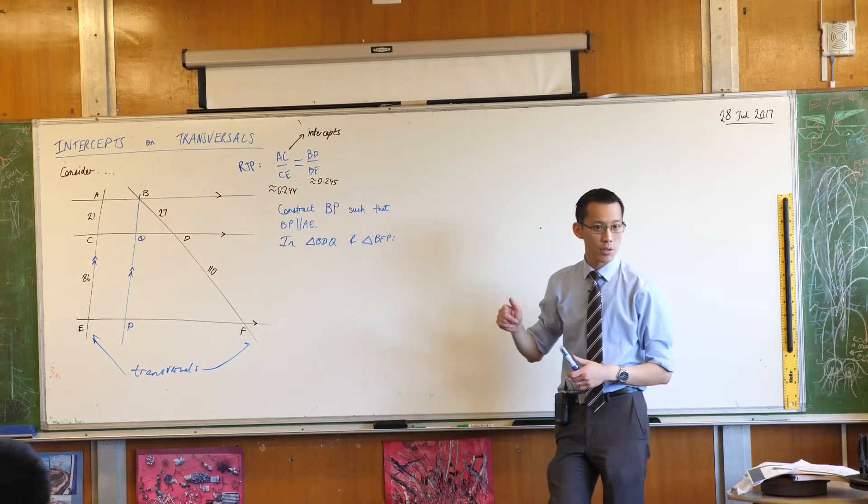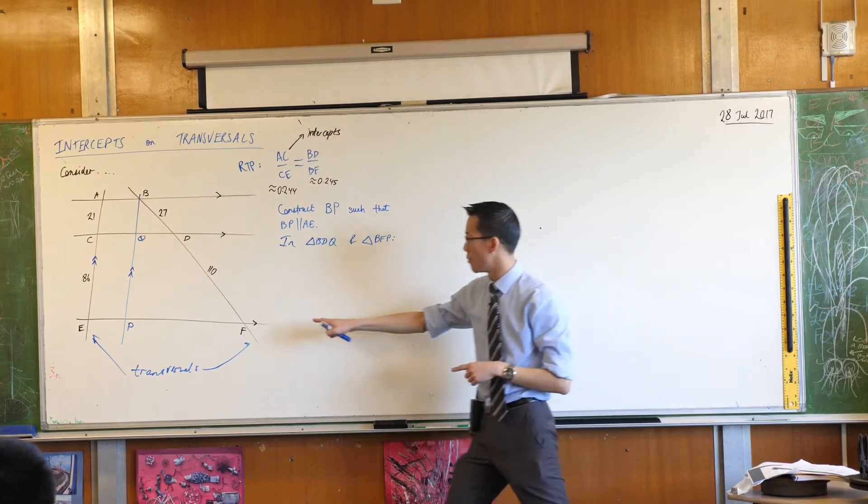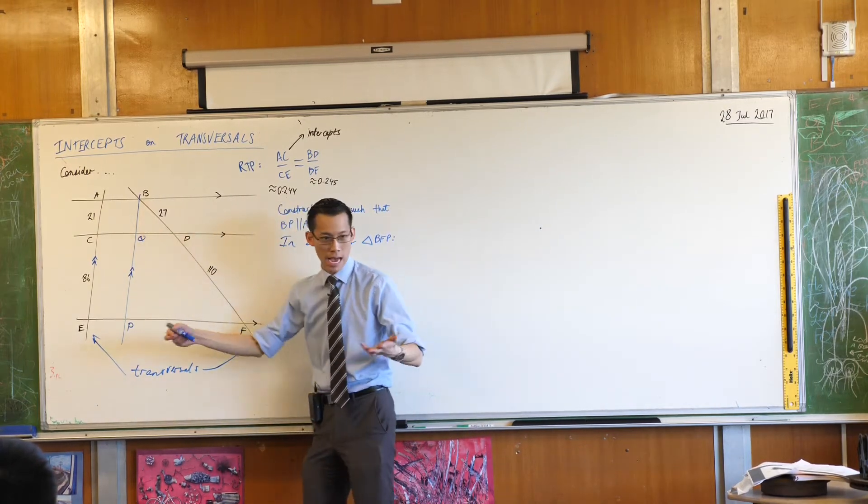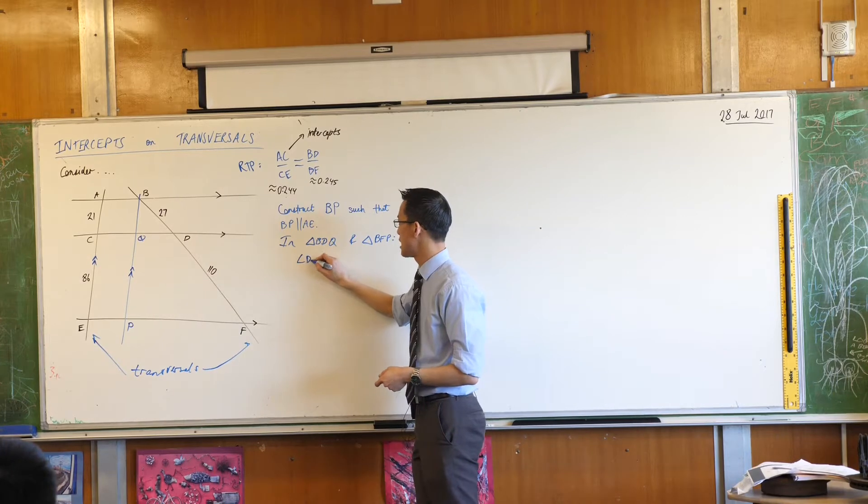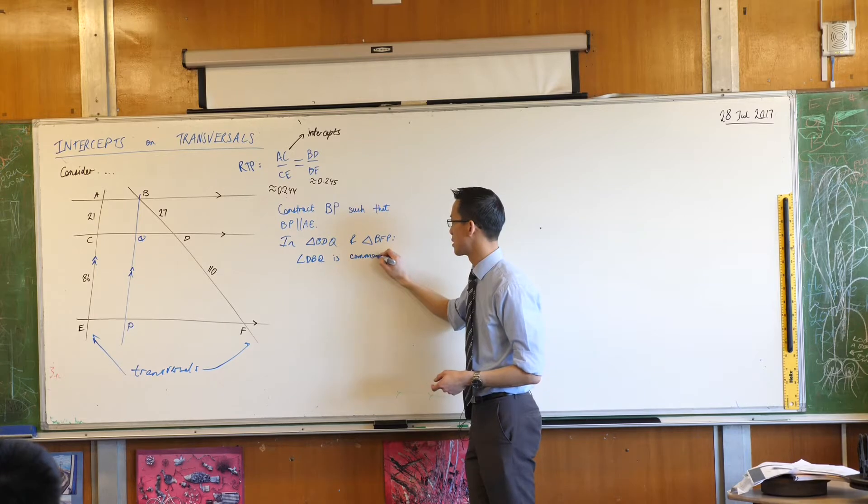There's a common angle. There's an angle that's in both triangles. Which angle is that? It's the one right at the top. F, B, P or of course you could have called it D, B, Q. Either of them is fine. I'm gonna say D, B, Q is common. That's all you need to say.